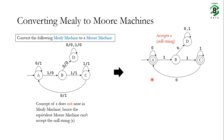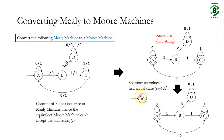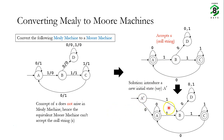To fix this, we introduce a new initial state A'. In our Moore machine, we replace the initial state with A'. Since this is a finite state machine, we must define transitions for all input symbols. If we give input 0 to A', it goes to state A, mirroring the original machine's transition. If we give input 1 to A', it goes to state B. The new state A' is not a final state, so this Moore machine no longer accepts the null string.